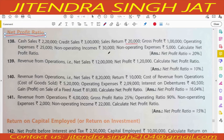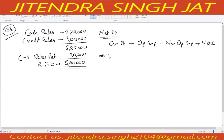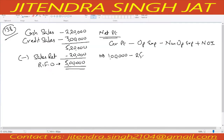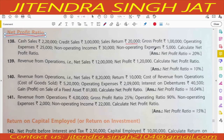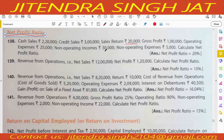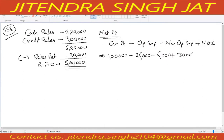Gross profit is given 1 lakh. Minus operating expenses, which are given 25,000. Non-operating expenses are given 5,000. Non-operating incomes are given 30,000, so we add it. So: 1 lakh minus 25,000 minus 5,000 plus 30,000 is equal to 1 lakh.